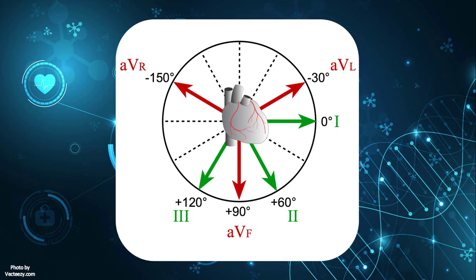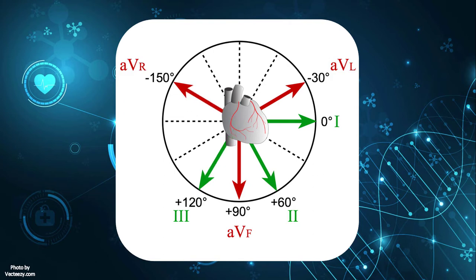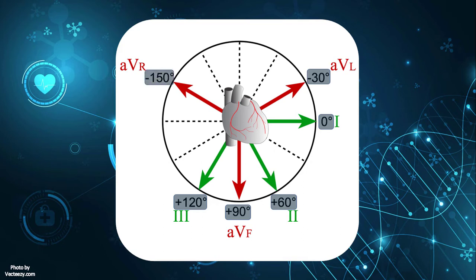The unipolar leads are perpendicular to the augmented leads: lead 1 is perpendicular to AVF, lead 2 is perpendicular to AVL, and lead 3 is perpendicular to AVR. Lead AVL is directed upwards and leftwards at minus 30 degrees. Lead 1 is horizontally directed at 0 degrees. Lead 2 is directed downwards and slightly leftwards at 60 degrees. Lead AVF is vertically directed at 90 degrees. Lead 3 is directed downwards and rightwards at 120 degrees. Lead AVR is directed upwards and rightwards at minus 150 degrees.